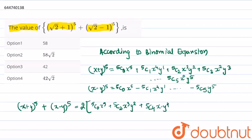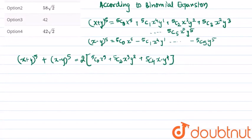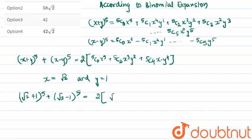Now we know that here x equals √2 and y equals 1. Therefore we get that (√2 + 1)^5 + (√2 - 1)^5 equals twice [(√2)^5 + 10(√2)^3 + 5√2].